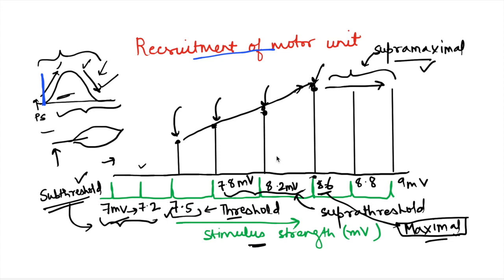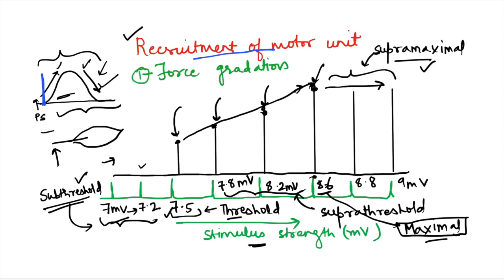Why do we need to know about recruitment of motor units? This is the mechanism the body uses for force gradation — depending on the amount of force required, the number of motor units recruited varies. To lift a pen, only a small motor unit contraction is sufficient. To lift a 2 kg or 5 kg object, more motor units are needed, and maybe for 10 kg the whole muscle contracts. This recruitment with increasing load is one mechanism of force gradation in our body.